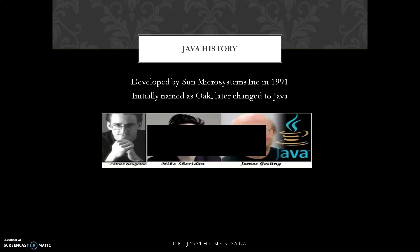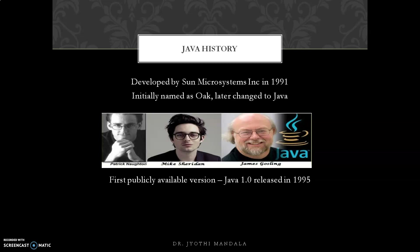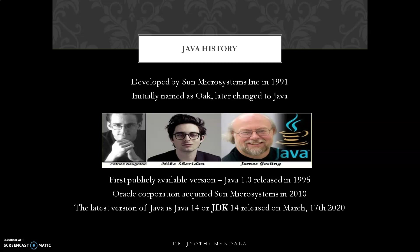The three main persons for developing this project are Patrick, Mike, and James Gosling. The first publicly available version is Java 1.0, released in 1995. In 2010, Oracle Corporation acquired Sun Microsystems, and from then onwards Java has been under Oracle's control. The present latest version is Java 14, or JDK 14, which stands for Java Development Kit, released on March 17, 2020.